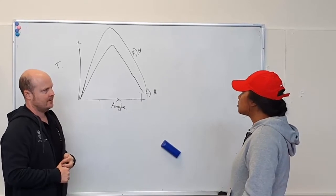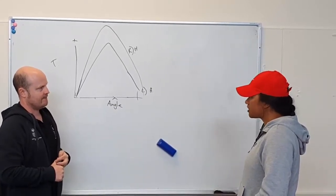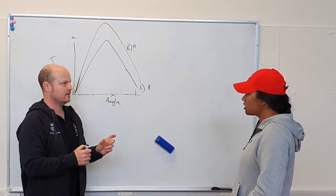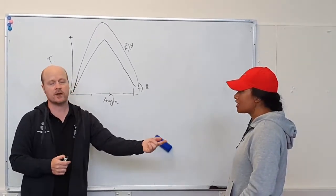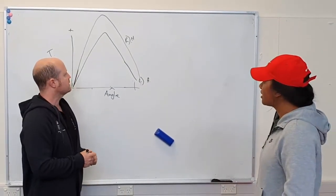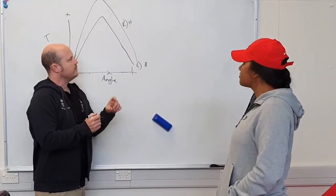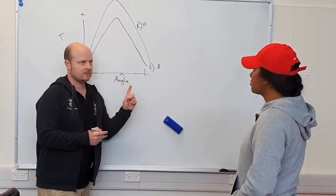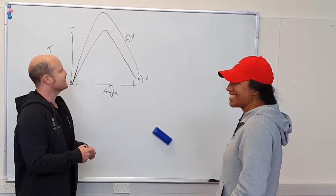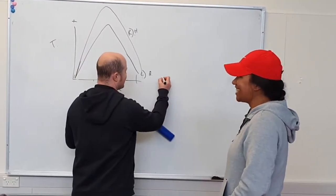You're going to do hamstring curls on your left side. What's it called when I do one side only? Single leg training or unilateral. Unilateral training. Would it be helpful if I did bilateral training? No.